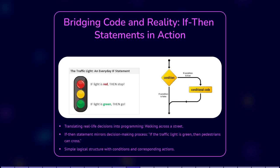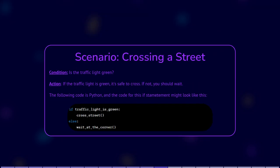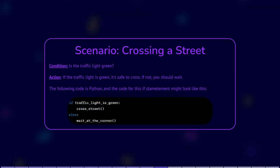Let's zoom into the scenario of crossing a street. The scenario is crossing the street. The condition is: is the traffic light green? The action, if the traffic light is green, is that it's safe to cross; else, you should wait. The following code is Python, and this is how the code might look for this specific if-statement.